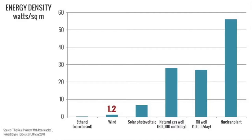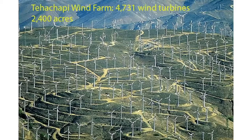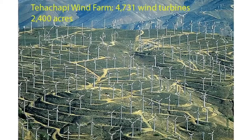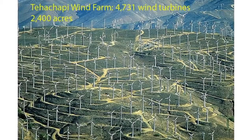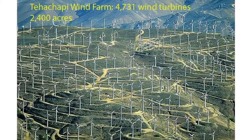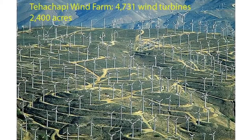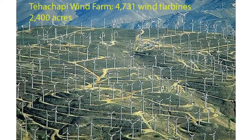Wind delivers only slightly more return on energy investment, producing about 1.2 watts per square meter. Wind farms obviously require a significant amount of land. California's Tehachapi wind farms' 4,031 wind turbines sprawl across a whopping 2,400 acres.